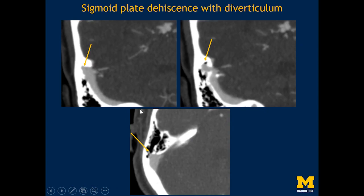Here is another patient who presented with right-sided pulsatile tinnitus. The sigmoid sinus shows a diverticulum and absence of an anterior osseous covering, which results in pulsations getting into the middle ear cavity.